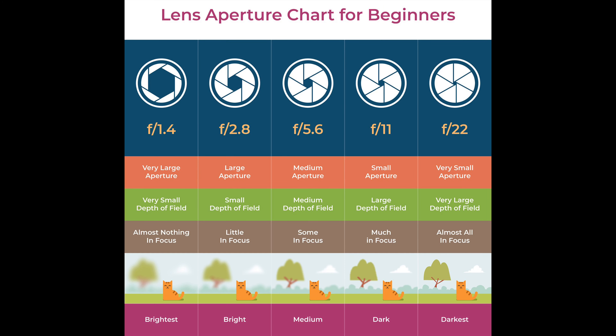First we're going to start with the base of the camera — not including the lens, just the body. The first thing I'm going to talk about is aperture. I've already done a whole video on aperture, so I'll leave that in the description below. Aperture is the amount of light that is let into your camera.